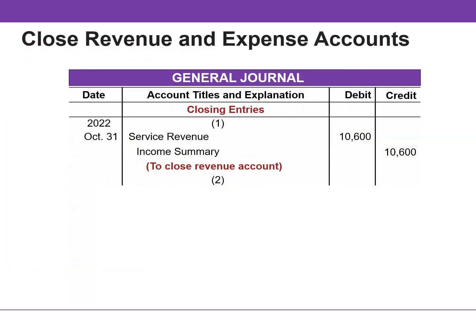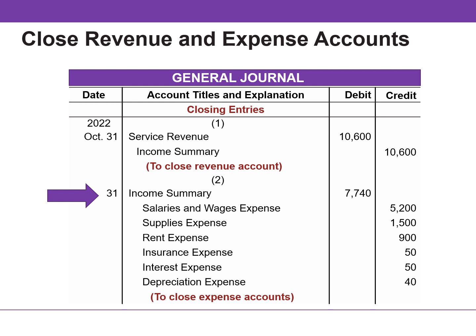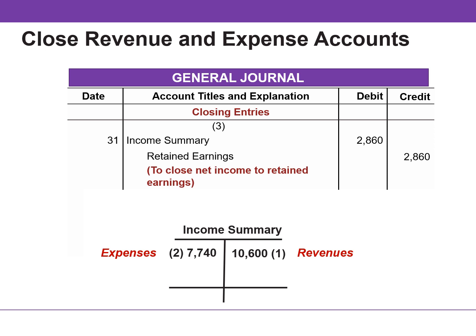The closing process records four entries. In the first entry, we debit each revenue account for its balance and credit income summary for total revenues. In the second entry, we debit income summary for total expenses and credit each expense account for its balance. The balance in income summary before it is closed must equal net income or net loss for the period. That balance is then transferred to retained earnings — we debit income summary and credit retained earnings for the amount of net income or net loss.